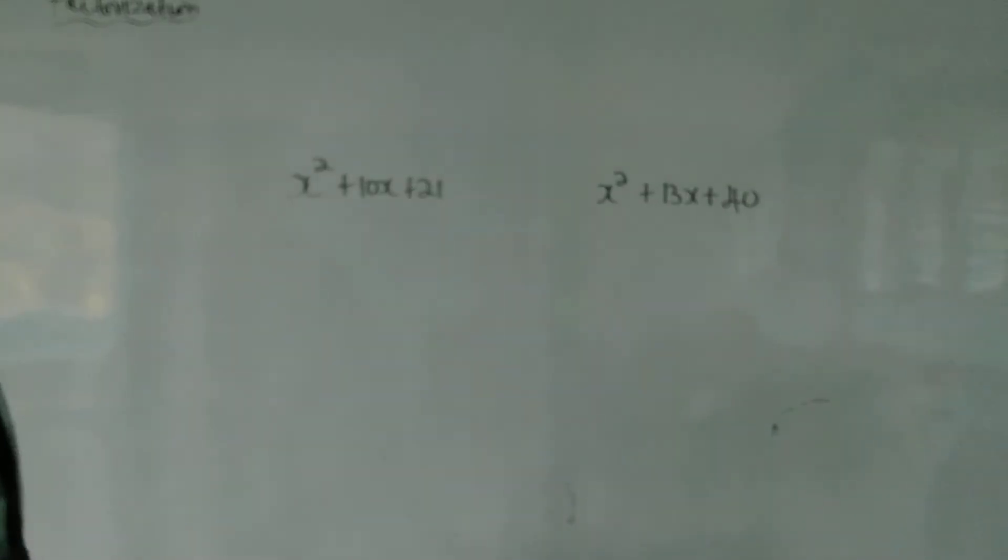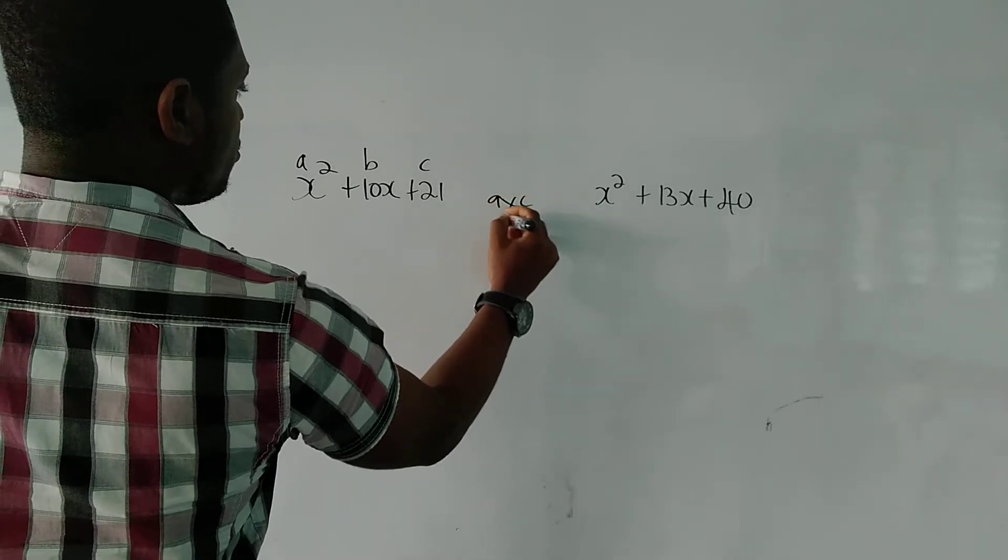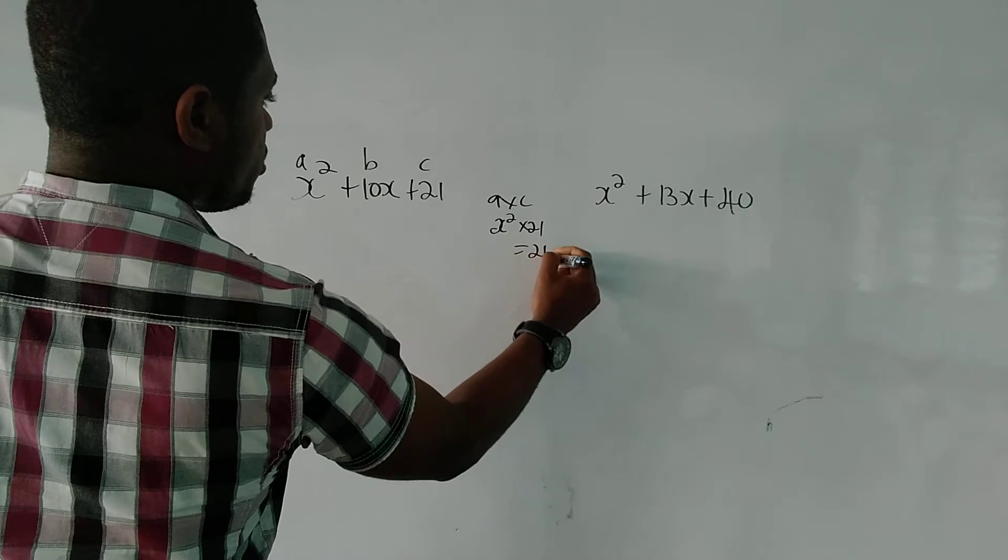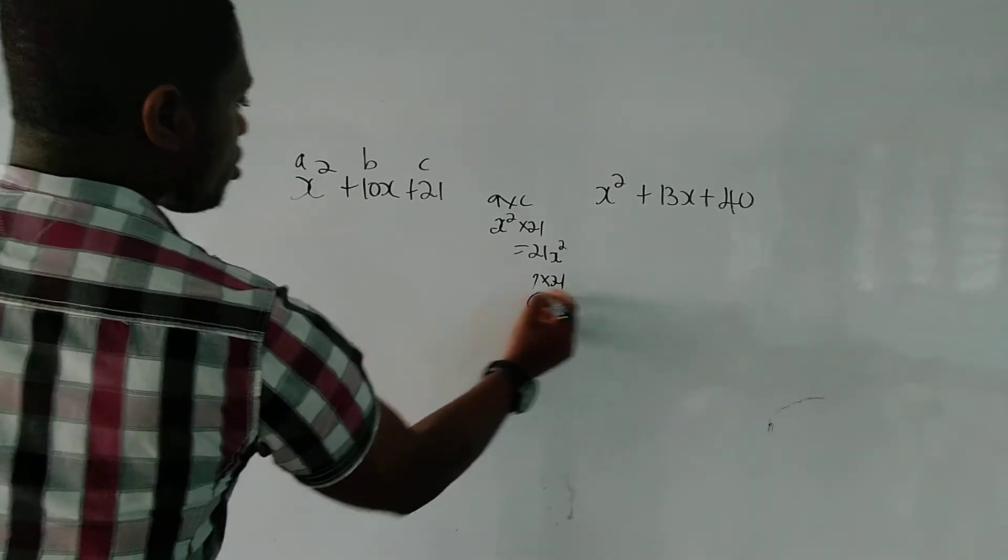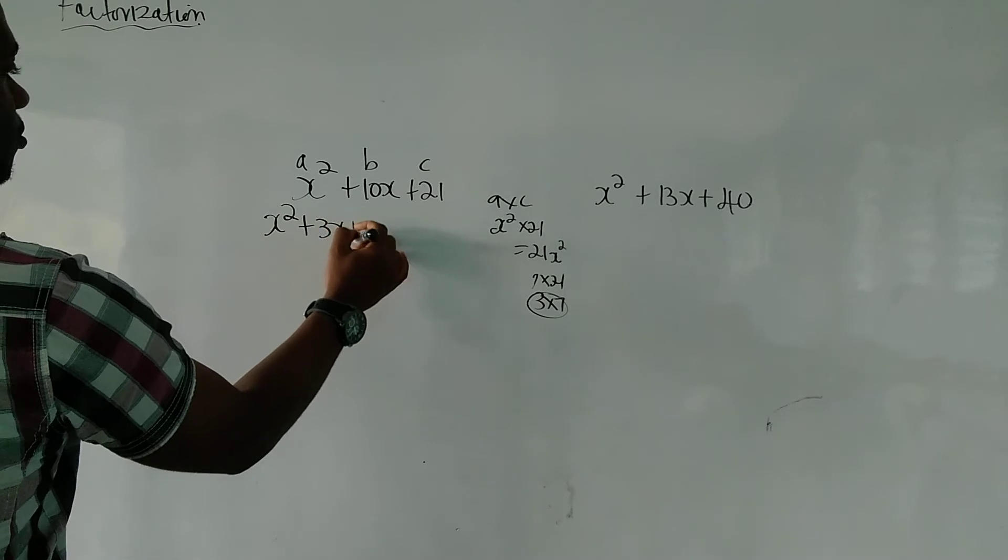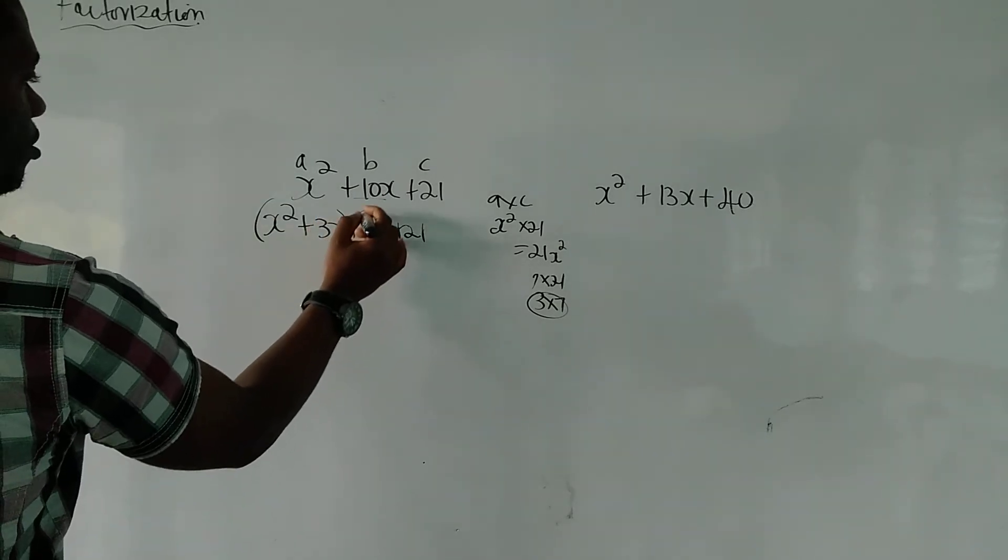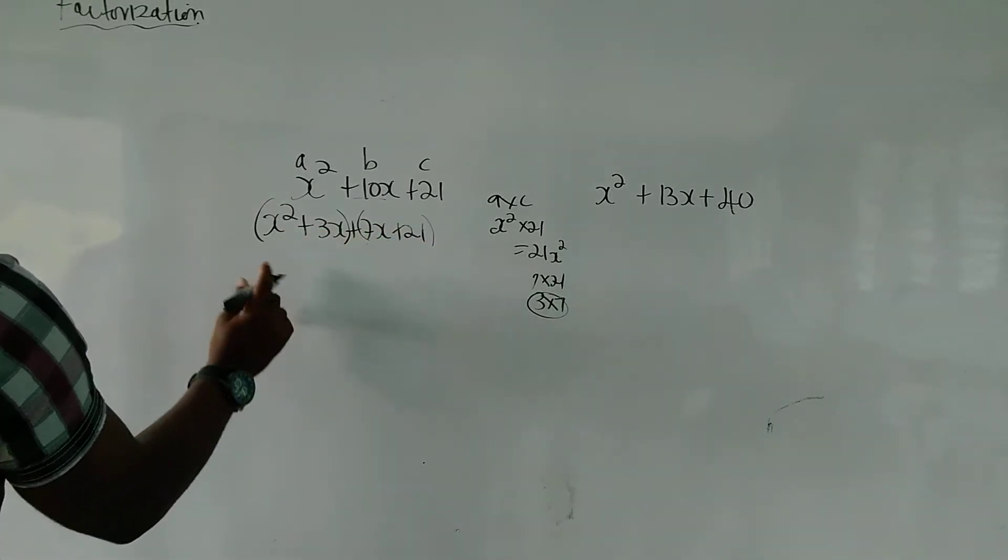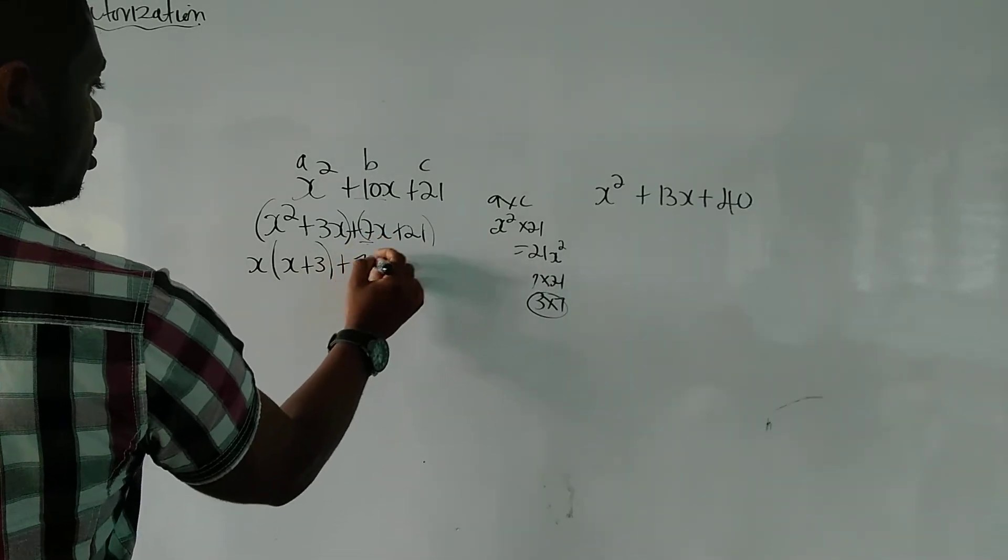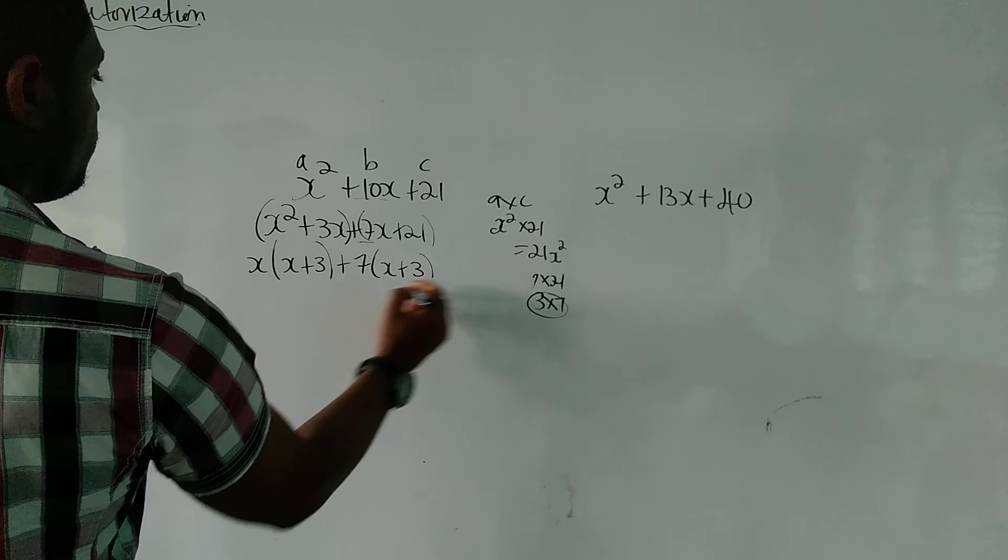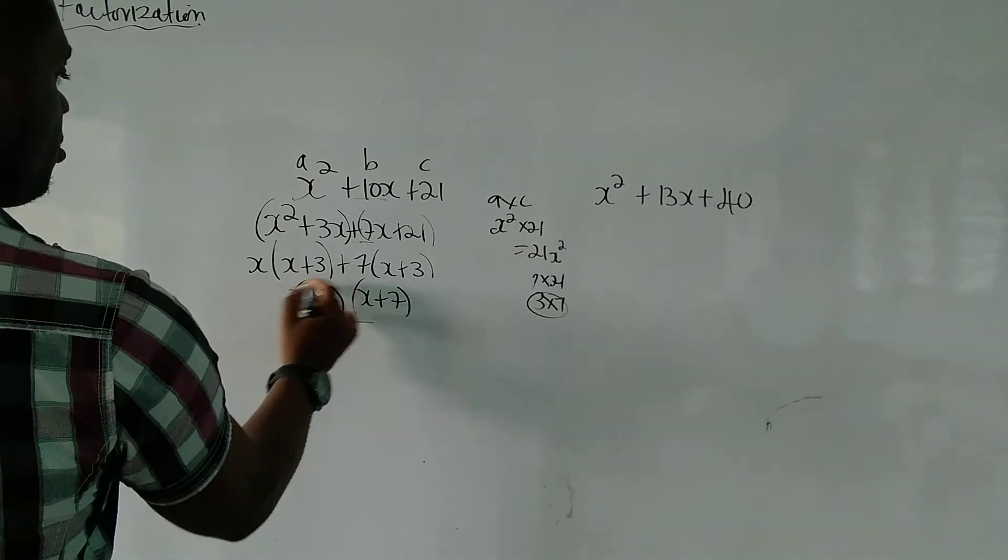All right. Let us continue. We have x squared plus 10x plus 21. So the same thing. A, b, c. And it's a times c, which is x squared times 21. That gives us 21x squared. 1 times 21 and 3 times 7. As I said, guys, you must know your times table. So it's 3 and 7. So it's x squared plus 3x plus 7x plus 21. Because 3x plus 7x gives us 10x. So we take out the x. x into that, leave x plus 3. The highest number that can go into 7 and 21 is 7. That's 7 times x plus 3. So it's x plus 3 and x plus 7. This is our answer.